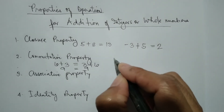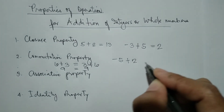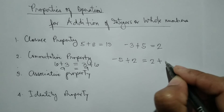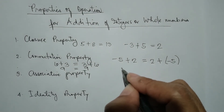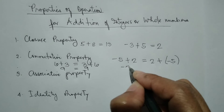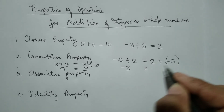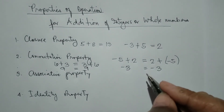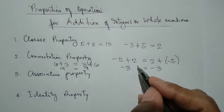Another example: negative 5 plus positive 2 is still equal to 2 plus negative 5. Negative 5 plus 2 equals negative 3, which is also equal to 2 plus negative 5, that is negative 3. So that's commutative property — if we change the order of the two addends, the sum is still equal.